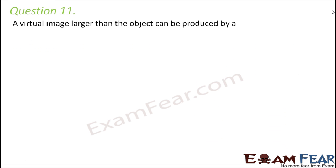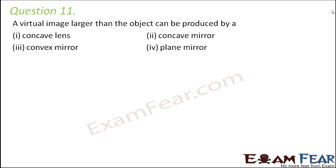Question number eleven: A virtual image larger than the object can be produced by which of the following — a concave lens, concave mirror, convex mirror, or plane mirror? It is not a plane mirror because that always produces a same-size image. It is not a concave lens because that always produces a virtual but diminished image. It is not a convex mirror because that also produces diminished images. The correct answer is a concave mirror.